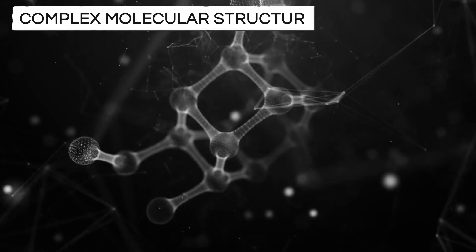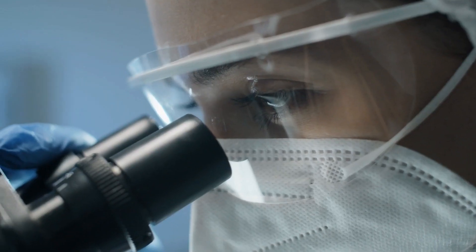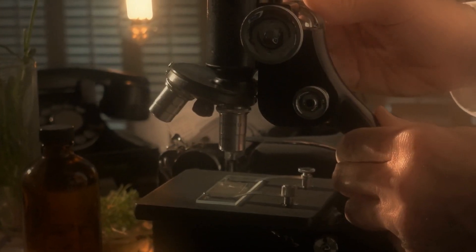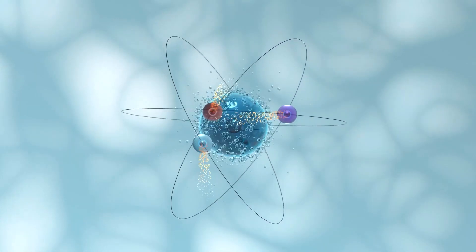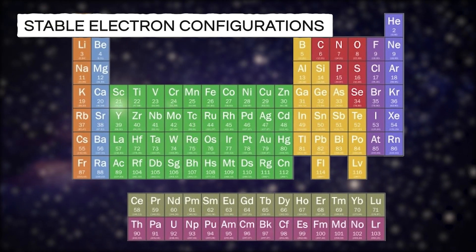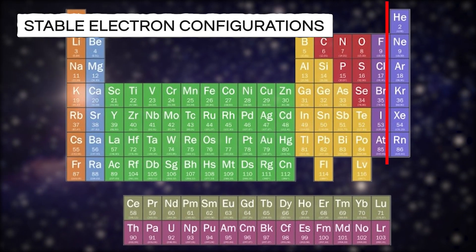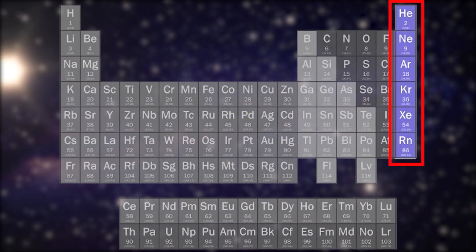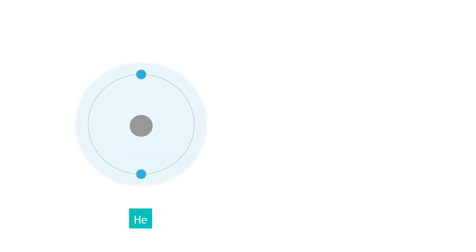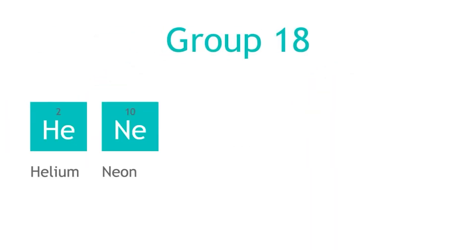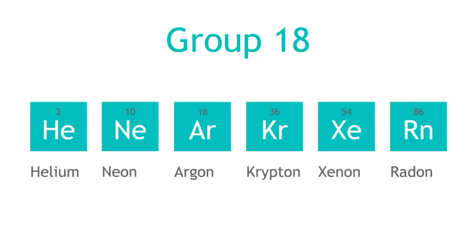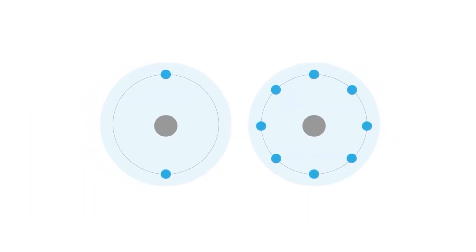Carbon possesses a unique ability to form complex molecular structures required for the intricate chemistry that life demands. This stems from the foundation of chemistry, which lies in physics, particularly quantum mechanics. Quantum mechanics reveals that certain electron orbital configurations are more energetically favorable and thus more stable. The most stable electron configurations are found in the noble gases, located on the far right side of the periodic table. These elements possess complete outer shells of electrons, representing the lowest energy state an atom can achieve. Consequently, noble gases are chemically stable and inert, rarely interacting with other atoms to form molecules.